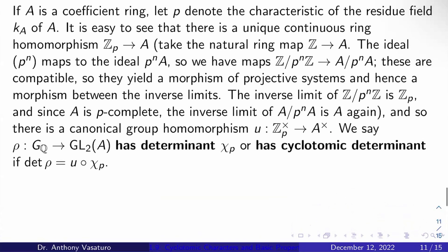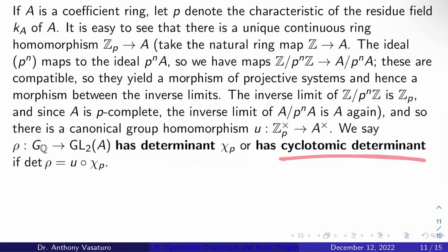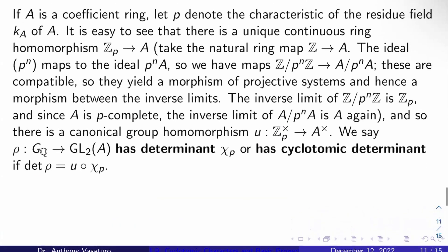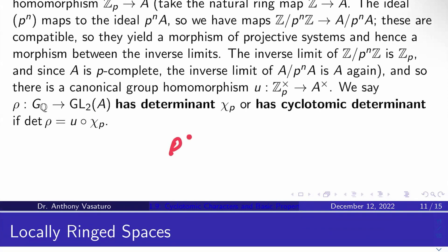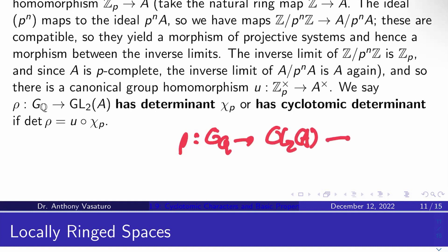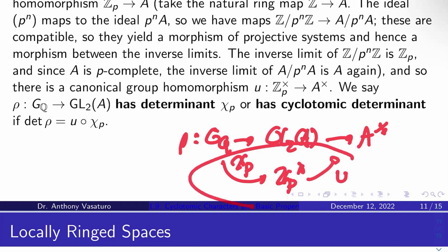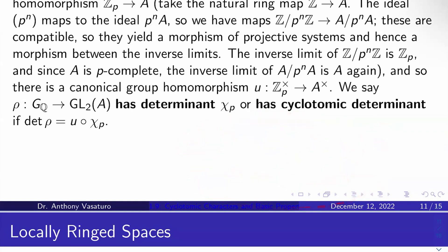Having a natural ring map from Z_P to A gives a canonical group homomorphism U between the groups of units, from Z_P× to A×. We say a Galois representation rho from G_Q to GL2 of A has P-adic cyclotomic determinant if det(rho) = U ∘ chi_P, the P-adic cyclotomic character. In other words, you have rho from G_Q to GL2 of A; taking the determinant gives a map to A×; and the P-adic cyclotomic character goes from G_Q to Z_P× then via U to A×. If these agree, rho has cyclotomic determinant.